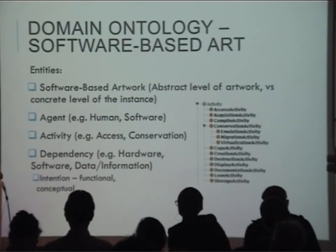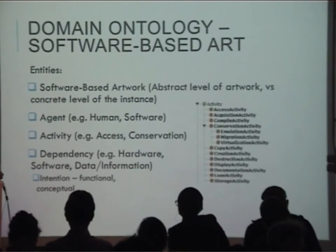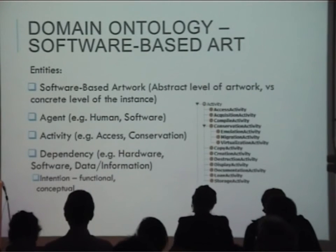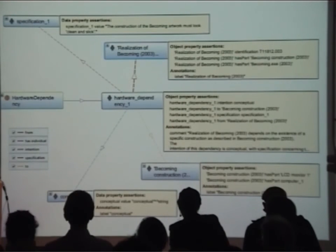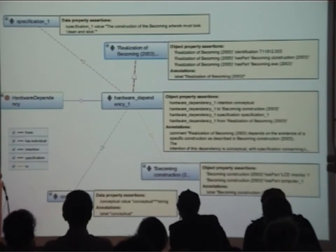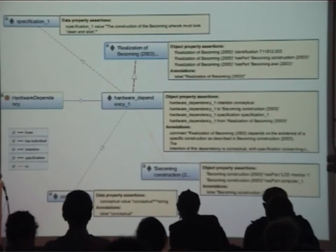Of particular relevance to the software-based art domain, the ontology also includes the modelling of intention — conceptual intention, which represents the meaning of the artwork given by its creator and the way the artist meant for the artwork to be interpreted, and functional intention, which represents relations that affect the proper functioning of the artwork. As an example, one slide shows a hardware dependency modelled using the domain ontology for software-based art — a hardware dependency for the artwork Becoming, showing how the modelling includes relationships between the hardware dependency itself, the artwork, the specification for the display of the artwork, and the intention behind the display.